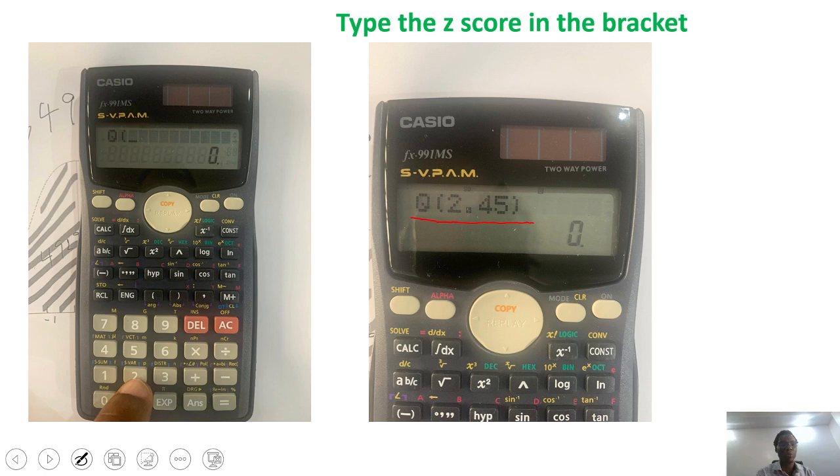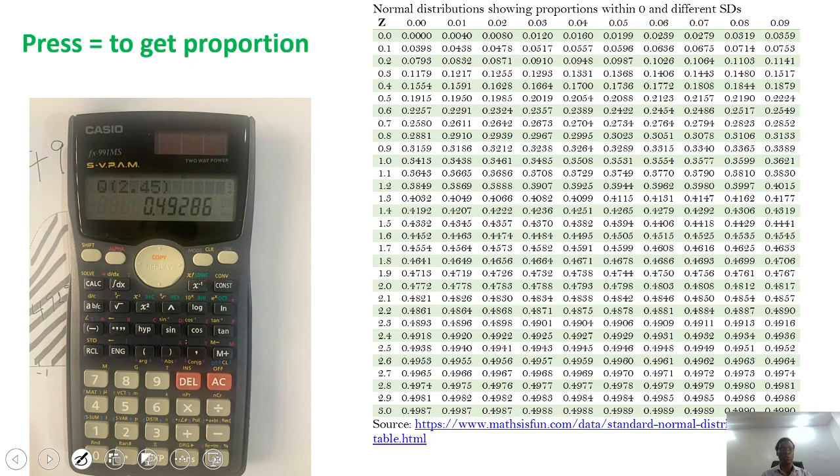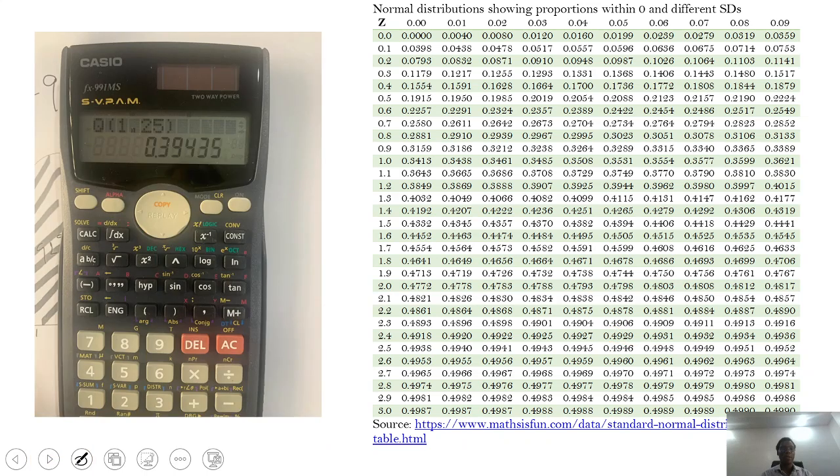So if you press 2, Q shows and it opens a bracket, and then you can type in the bracket 2.45. If you press the equal sign, it gives you this value here. But if you look at this, you'll see that it is exactly the same thing as the value you would get here, 0.4929.